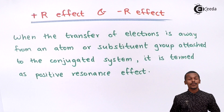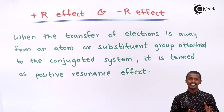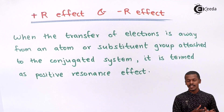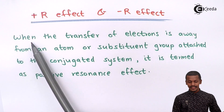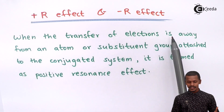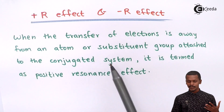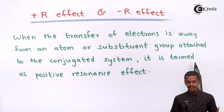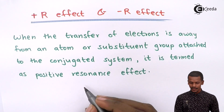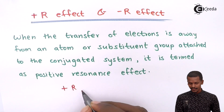We are going to talk about the Plus R effect and Minus R effect. Let us understand what is Plus R effect. When the transfer of electrons is away from an atom or substituent group attached to the conjugated system, it is termed as positive resonance effect, or we could call it as Plus R effect.